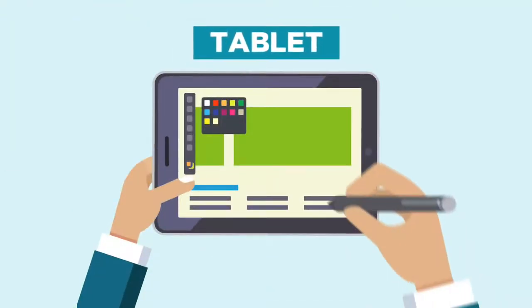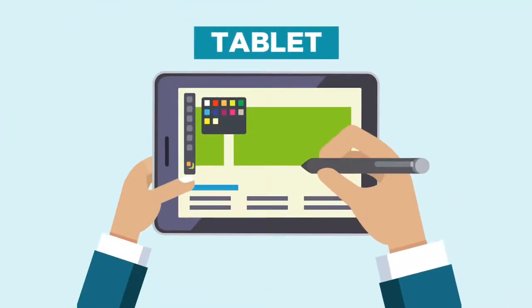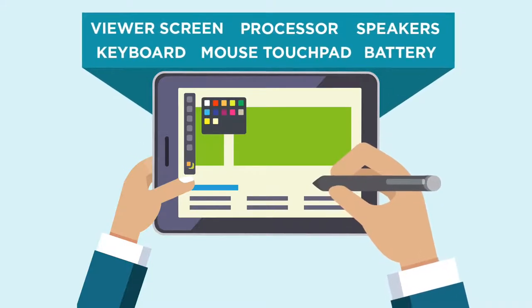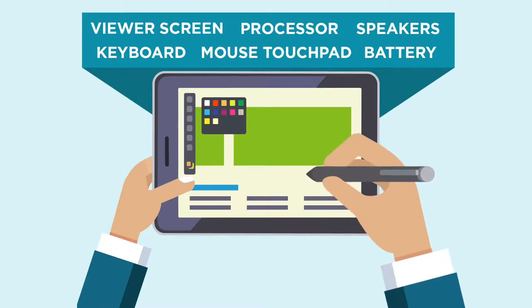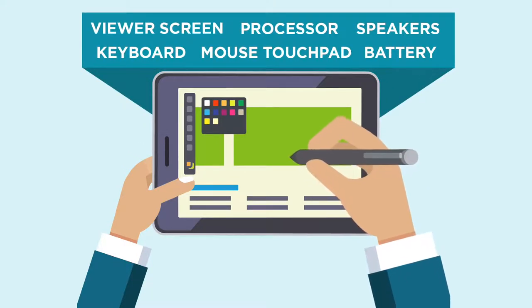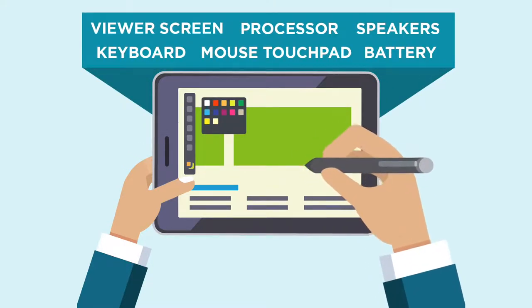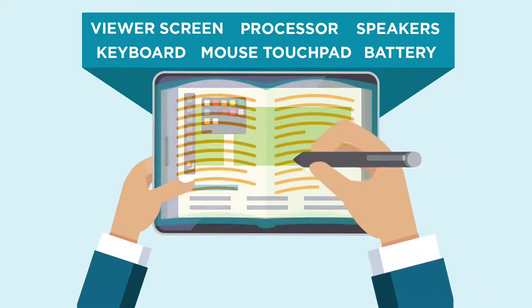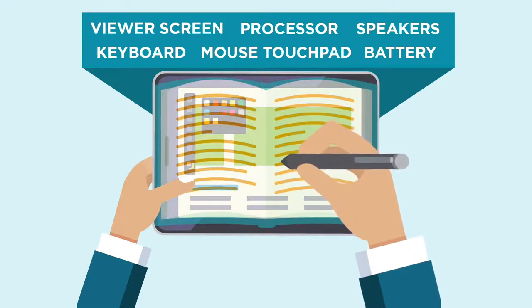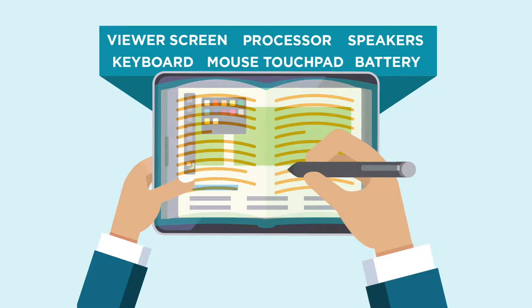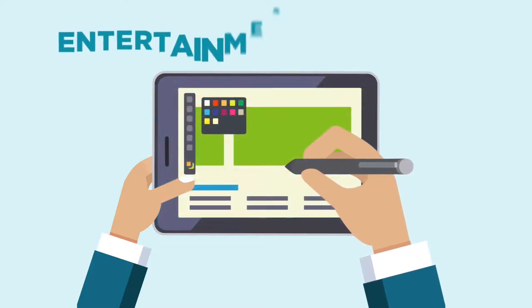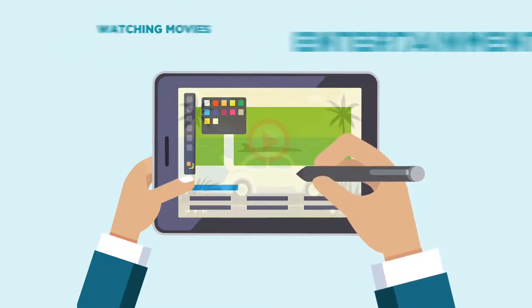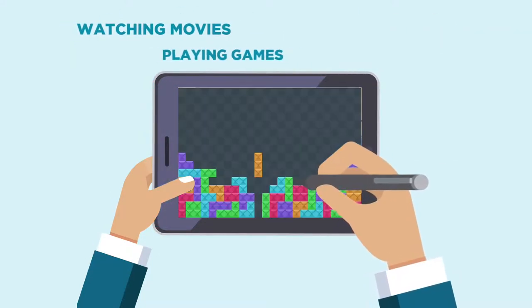A tablet is another type of portable personal computer. The computer parts that make up the tablet are contained in a single device. It is smaller than most laptops, typically the size of a book. Because of their small portable size, tablets are often used for entertainment activities, like watching movies or playing games.